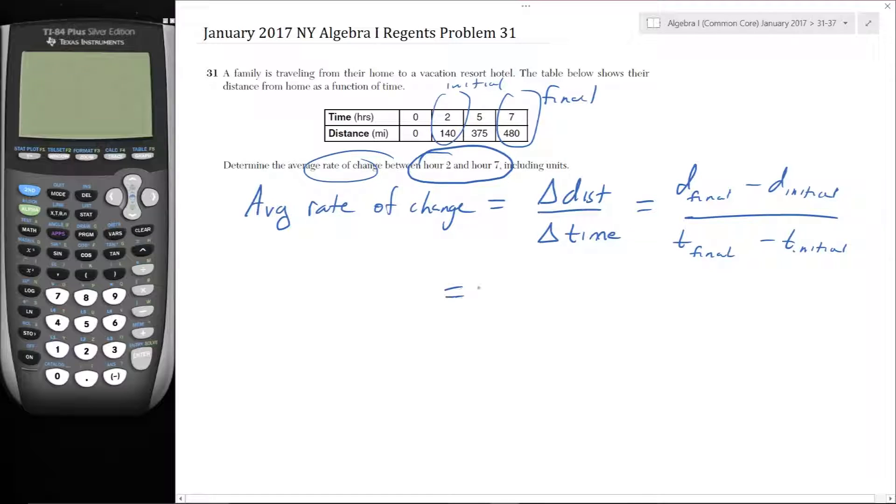So that's equal to 480 minus 140 divided by 7 minus 2.